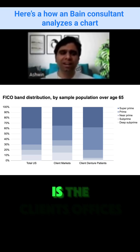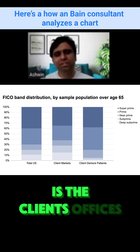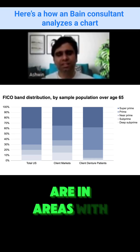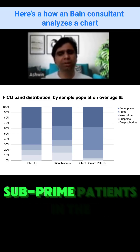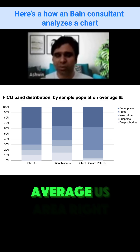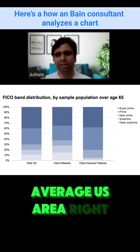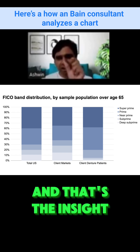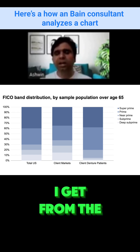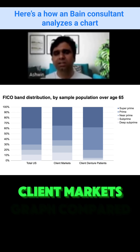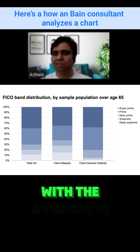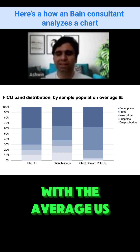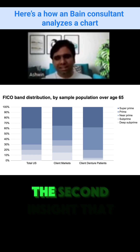What I see from the exhibit is that the client's offices are in areas with the most subprime and deep subprime patients compared to the average US area. And that's the insight I get from the client markets graph compared with the average US area graph.